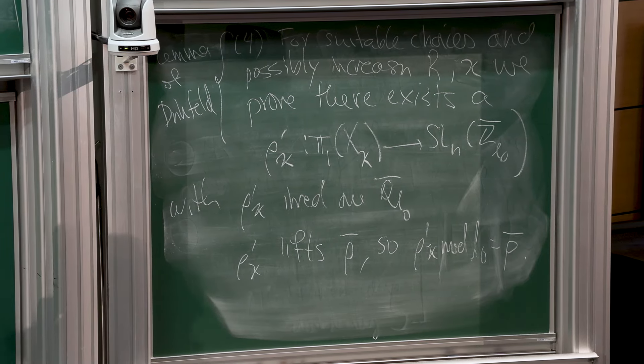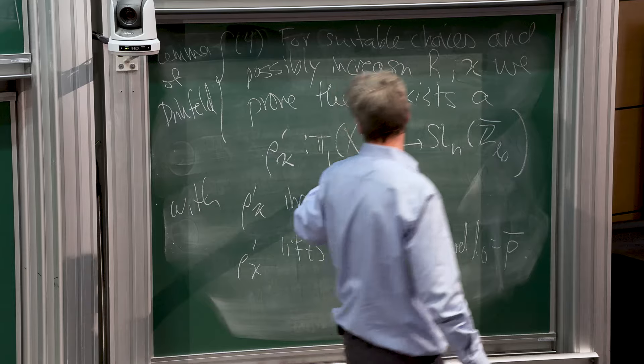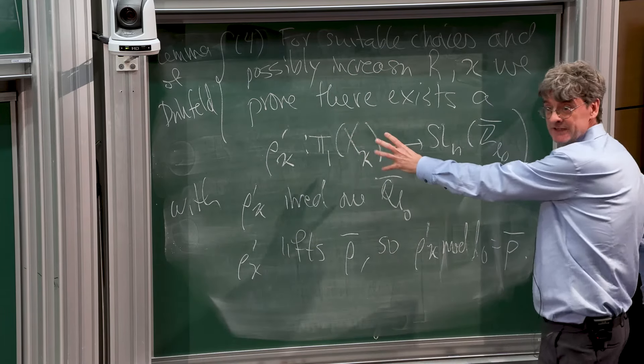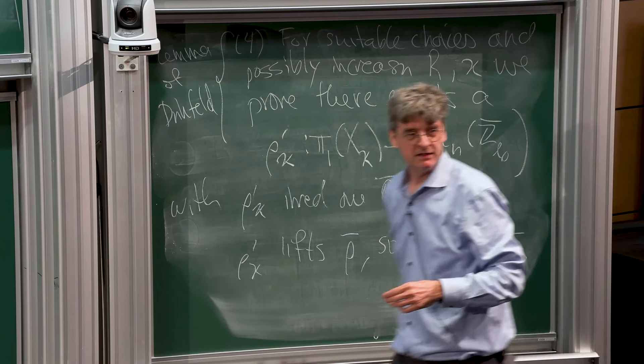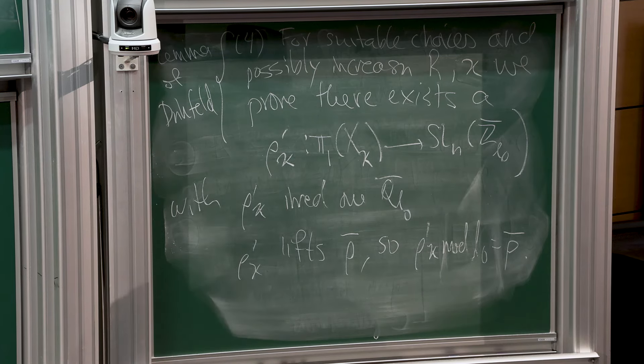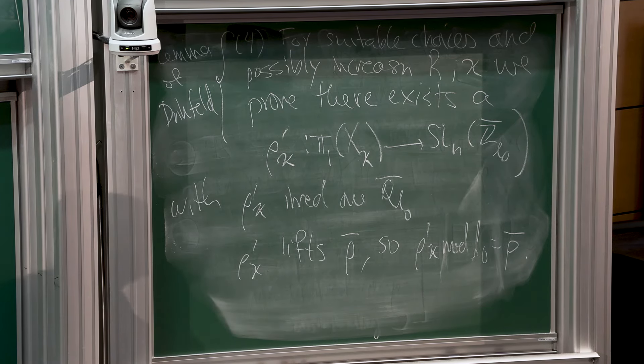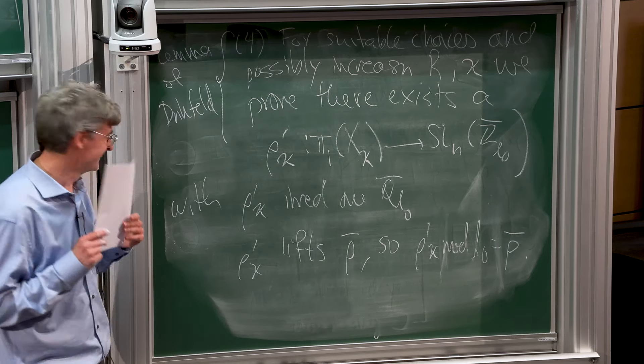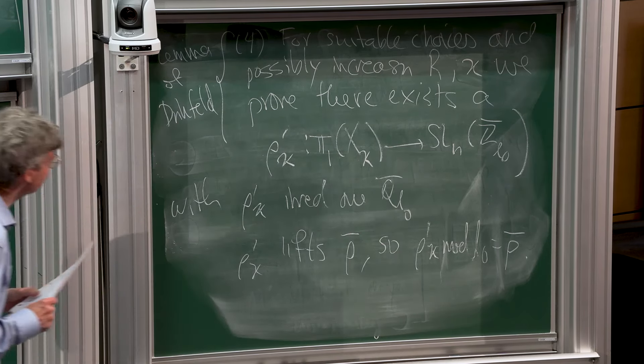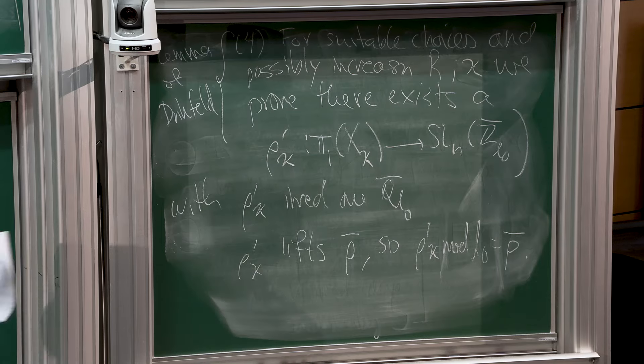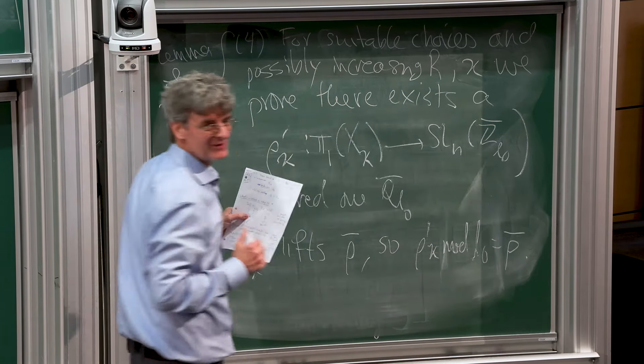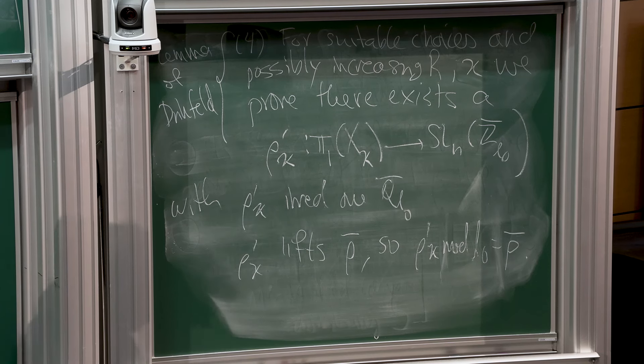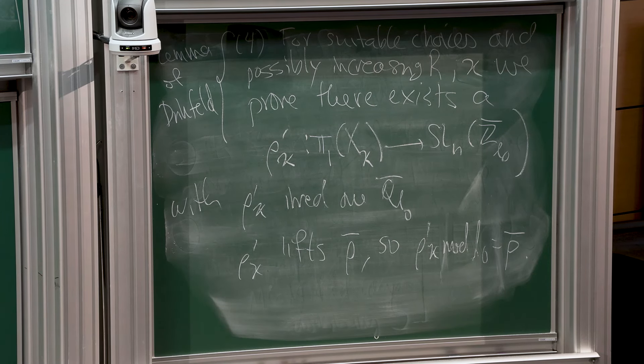I'd like to credit this to Drinfeld, who has a paper proving some of Kazhdan-Sarnak's conjecture, and this lemma is in Drinfeld's paper. It requires you to make your choices good. In particular, you can actually assume the residual representation is absolutely irreducible by picking sufficiently general points.